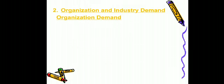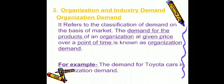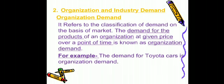Next is organization and industry demand, which can be classified on the basis of the market. Organization demand: the demand for the products of an organization at a given price over a point of time is known as organization demand. When a particular organization's product is demanded at a given price and a point of time, that is organization demand. For example, the demand for Toyota cars is an organization demand.